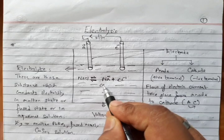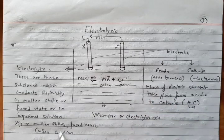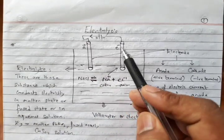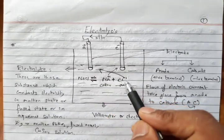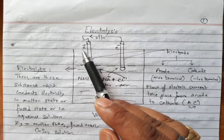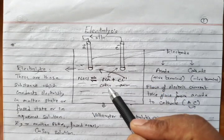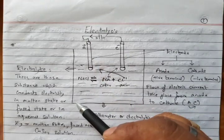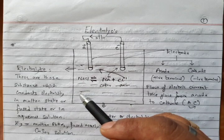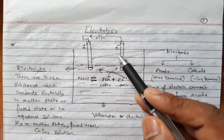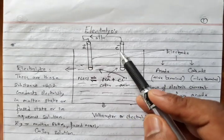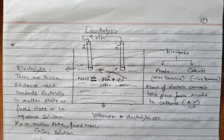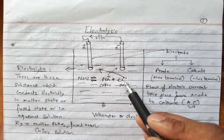Positive charge ions are called cations and negative charge ions are called anions. Opposite poles attract, so plus is attracted towards minus and minus towards plus. During electrolysis, cation will migrate towards cathode and anion will migrate towards anode. To remember: C goes to C and A goes to A — cation always migrates towards cathode and anion always migrates towards anode.